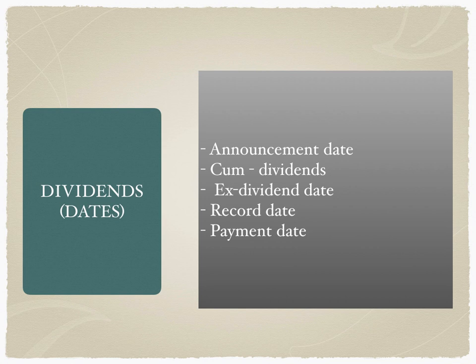This specific example uses dividends, but the ex-date, record date, and payment date apply to all corporate actions — whether it is a stock split, reverse stock split, mergers and acquisitions, spin-off, etc. For any kind of corporate action announcement, the record date and the ex-date would be announced by the company.